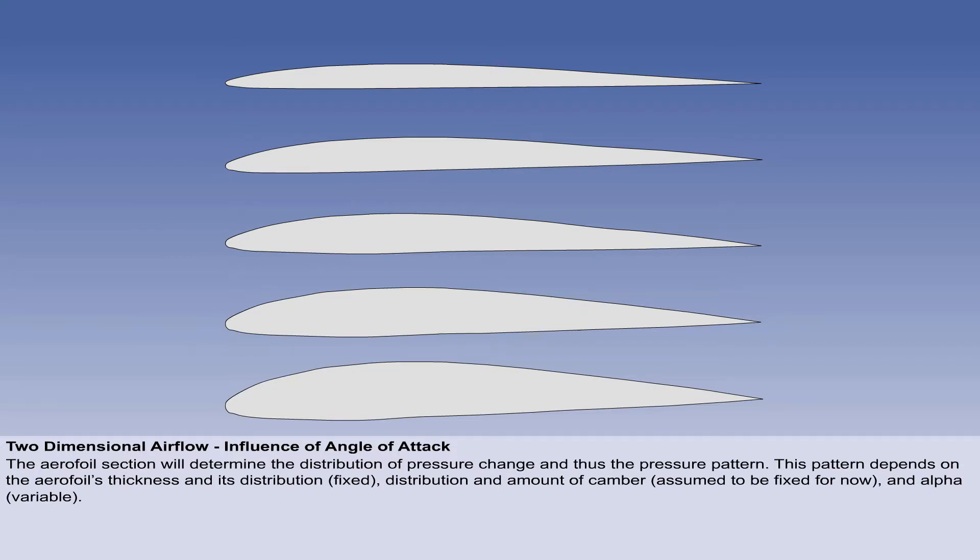The aerofoil profile presented to the airflow will determine the distribution of velocity change, and hence the pressure pattern over the surface. This pattern is determined by the aerofoil's geometry: the thickness and its distribution, which are fixed; the camber and its distribution, which are assumed to be fixed for now; and by the alpha, which is variable.